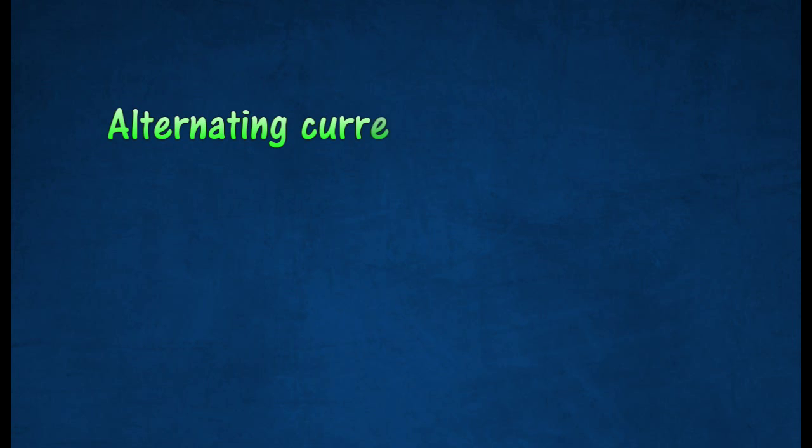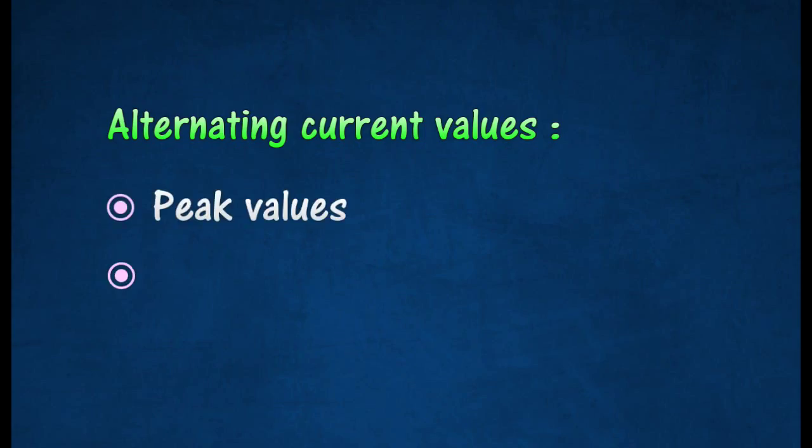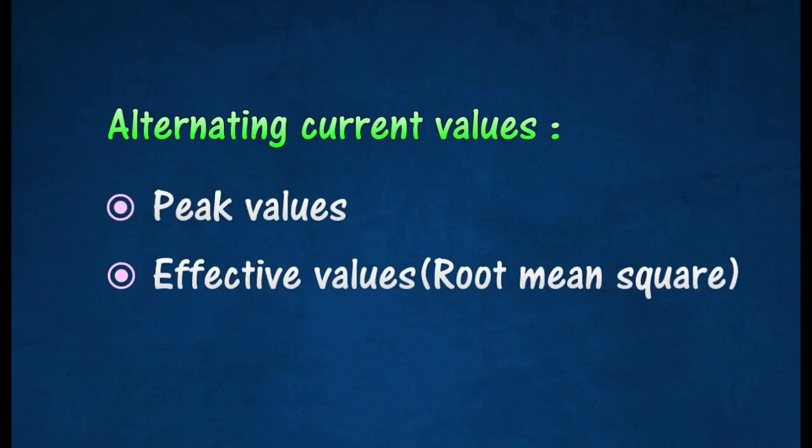In discussing alternating current and voltage, it is necessary to express the current and voltage in terms of maximum or peak values and effective values. Each of these values has a different meaning and is used to describe a different amount of current or voltage.